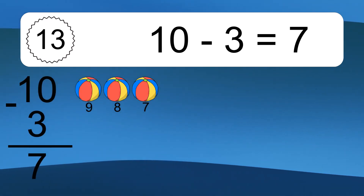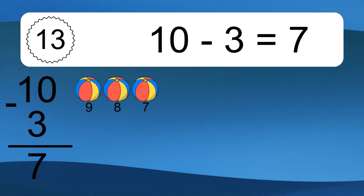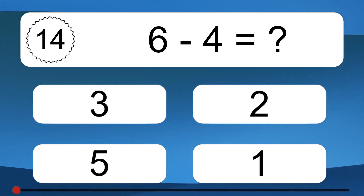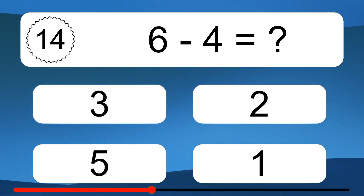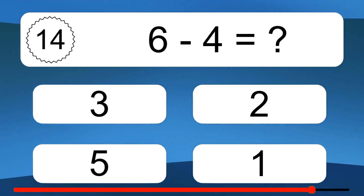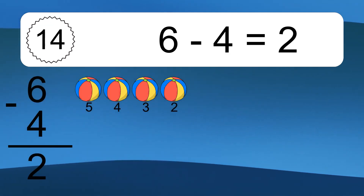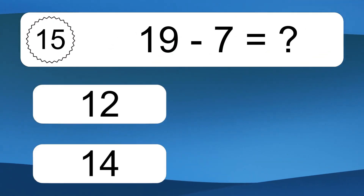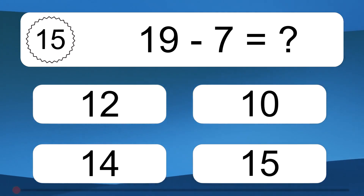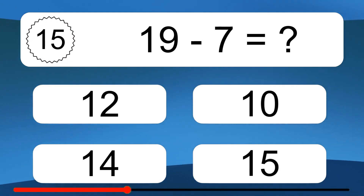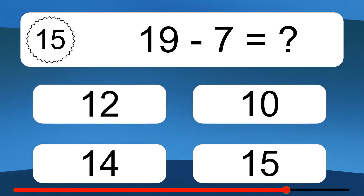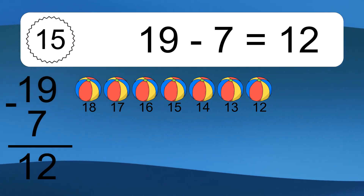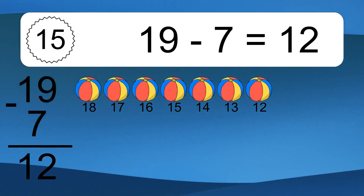10 minus 3 equals what? 10 minus 3 equals 7. 19 minus 7 equals what? 19 minus 7 equals 12. Let's count it: 18, 17, 16, 15, 14, 13, 12.